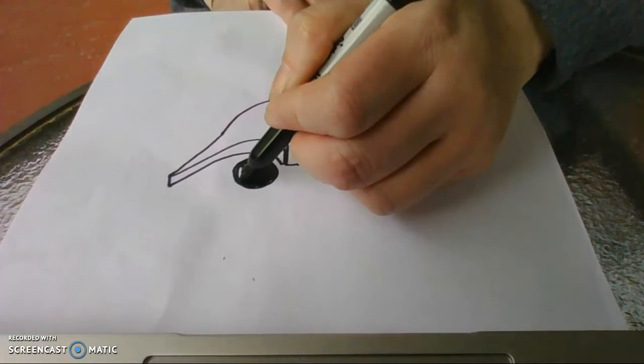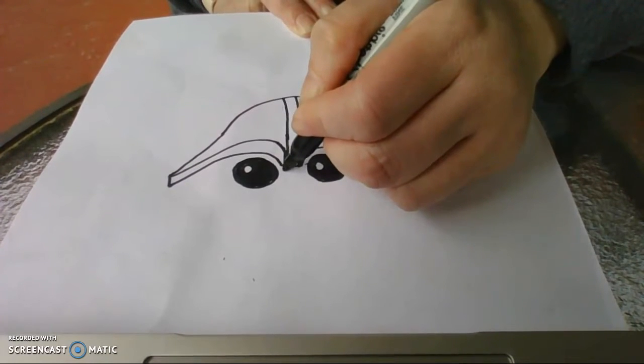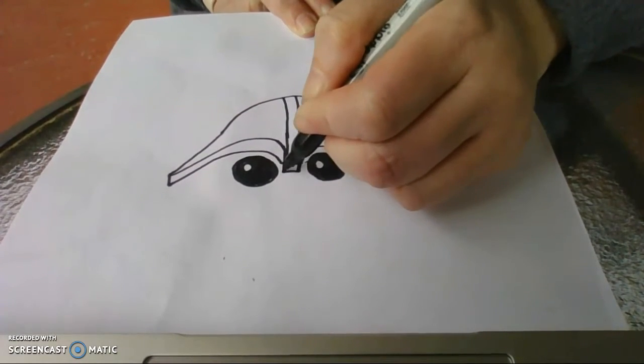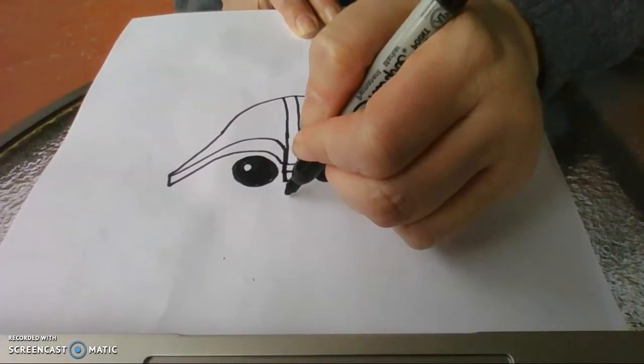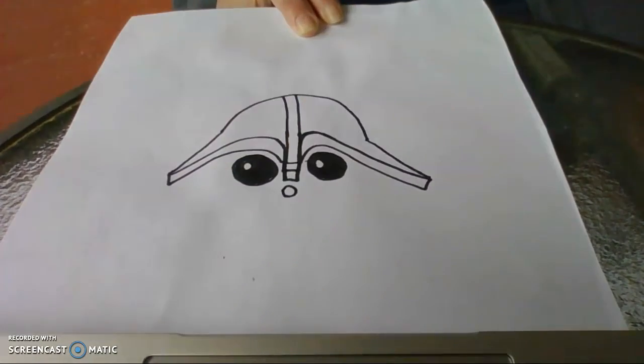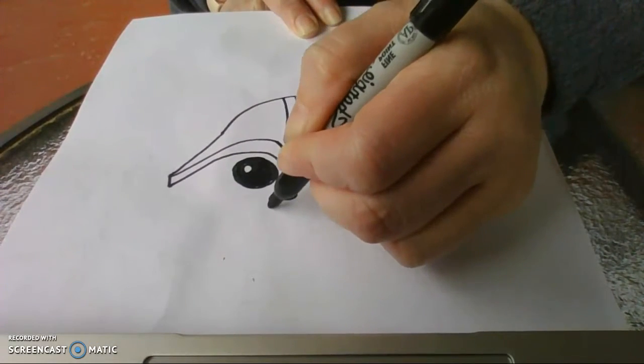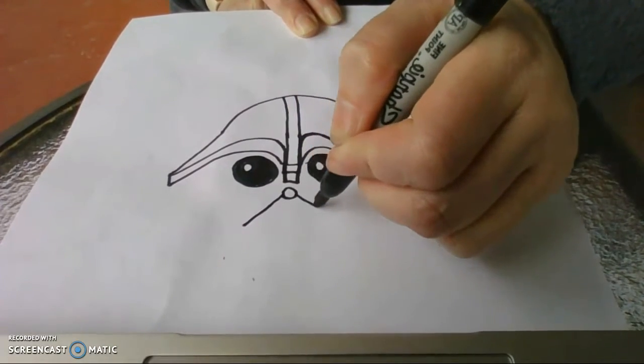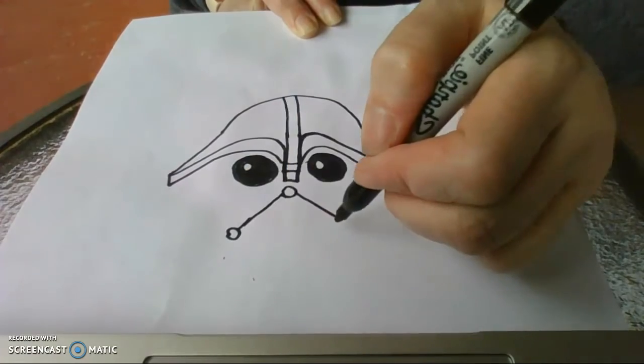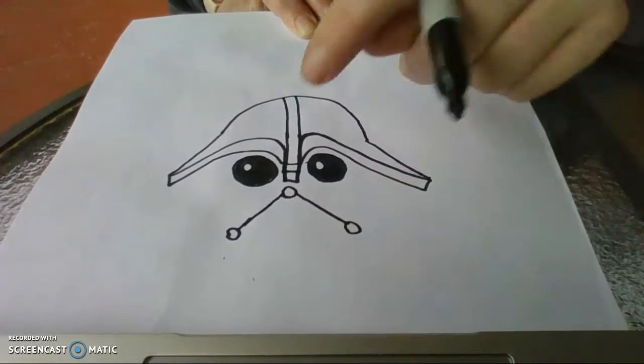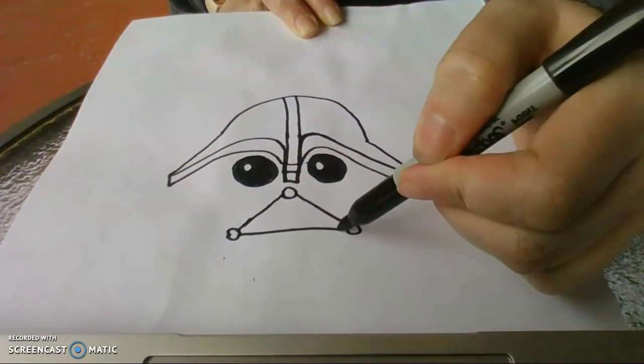And then down below this piece right here, I'm going to add two more rectangles. At the bottom of this, I'm going to do an open circle. And right here, I'm going to do a line out and a line out for the mouth. Then I'm going to put a circle at the end of each line, and then I'm going to connect these two circles. So I've made one big triangle.